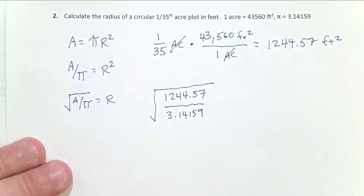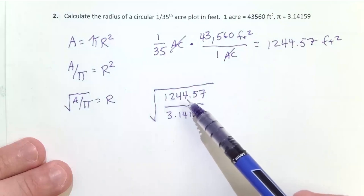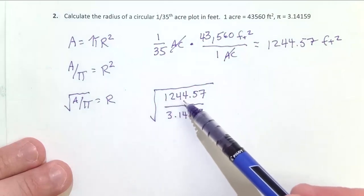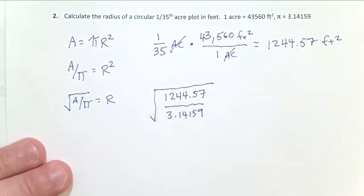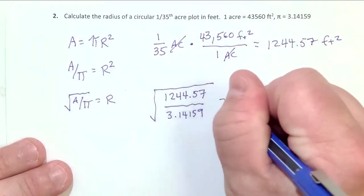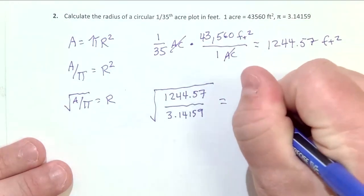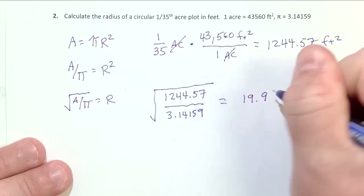Now, if I'm doing this in a calculator, I have to remember the order of operations. I need to take 1,244.57 divided by 3.14159, take that quantity, which is going to be about 400, then take the square root of it, and that is going to equal 19.9 feet.